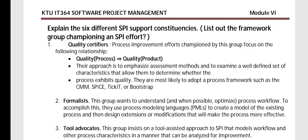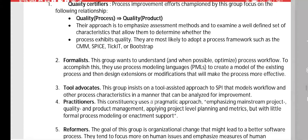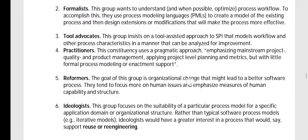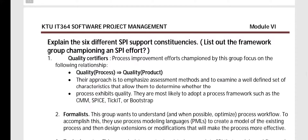Next are the six SPI support constituencies — the framework groups that champion an SPI effort. The question may also be phrased as: list the framework groupings championing an SPI effort. The six constituencies are: quality certifiers, formulas, tool advocates, practitioners, reformers, and ideologists. These are the groups that support and help the SPI effort.